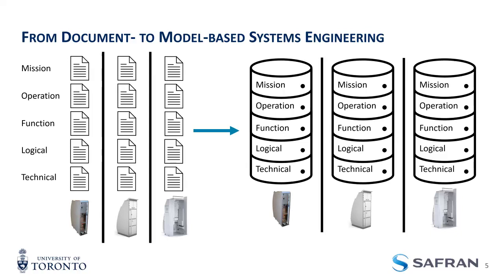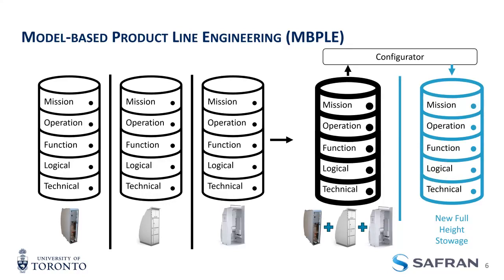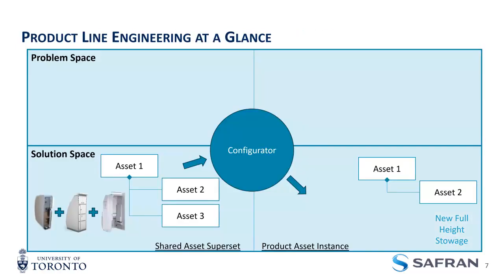Product line engineering comes in and says: just create one big model, put all of them in here, and define the variability within that. You can then use this model to configure a new product and only have a single source to look through. But this is only part of the picture — this is essentially the system model in the solution space. When creating a new product, you don't want to go through the entire model and decide on every single requirement, safety case, and test. You want to make bulk decisions: if you include an artifact, you probably want its requirements and safety case together.